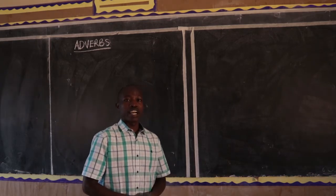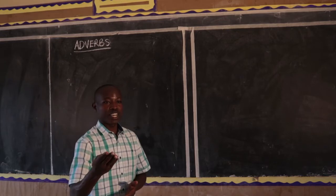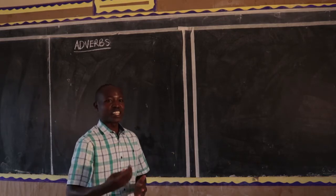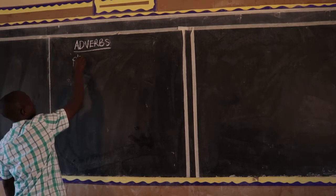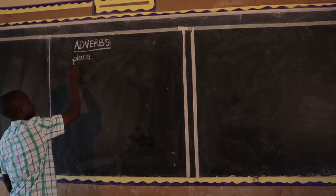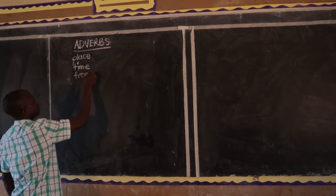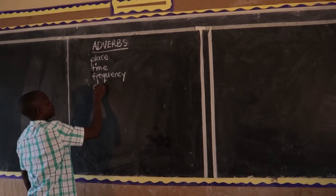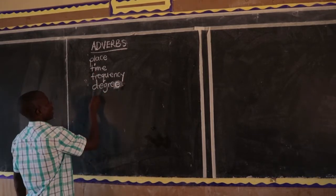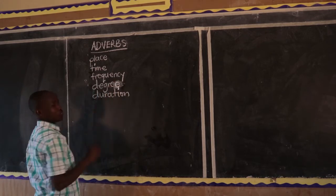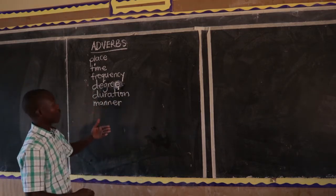We went ahead and looked at kinds of adverbs. The first one you have in your mind should be adverbs of place, adverbs of time, adverbs of frequency, adverbs of degree, adverbs of duration, and adverbs of manner. We had six — here we have six of them.